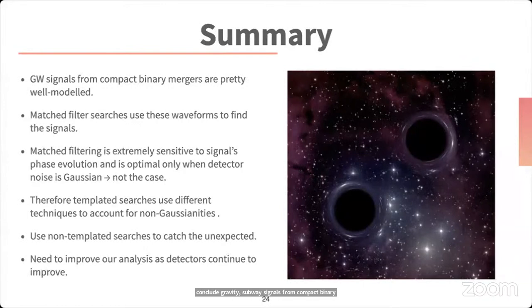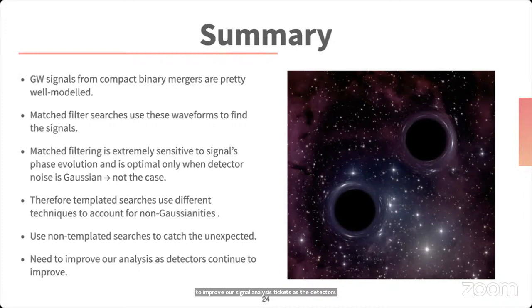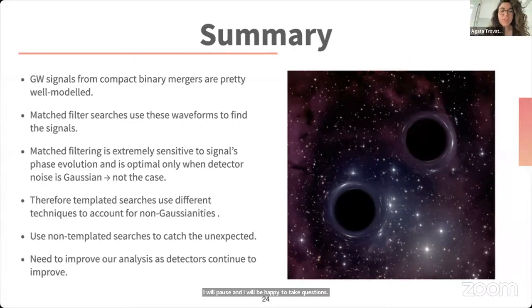To conclude: gravitational wave signals from compact binary mergers are pretty well modeled, and there are many different ways of finding these signals. Matched filtering is extremely sensitive to the signal's phase evolution and is optimal only when the detector data is Gaussian — unfortunately this is rarely the case, so we use various tricks and techniques to account for non-Gaussian behavior in the detector data. We also use non-templated searches for unexpected signals, and as detectors continue to improve, we will need to keep improving our signal analysis techniques, since improved sensitivity will reveal new noise sources we haven't seen before.